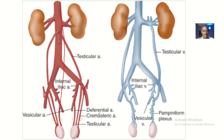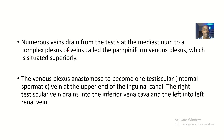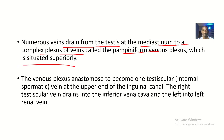You can see the arterial supply of the testis here, and this is the venous drainage we're focusing on. I want you to know the Pampiniform plexus — numerous veins drain from the testis at the mediastinum to a complex plexus of veins called the Pampiniform venous plexus, situated superiorly. This venous plexus anastomoses to become one testicular vein at the upper end of the inguinal canal.